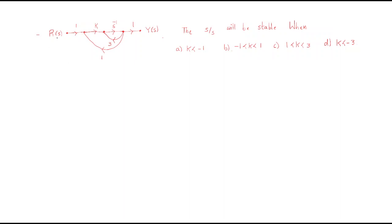For the next problem, we are given a signal flow graph with input r(s) and output y(s). The options for when the system is stable are: (a) k < -1, (b) -1 < k < 1, (c) 1 < k < 3, (d) k < -3. We need to find the characteristic equation to test stability.